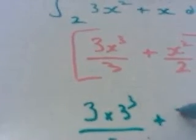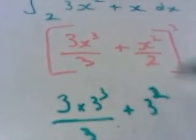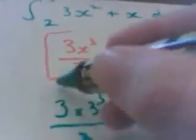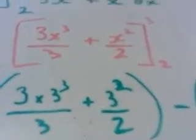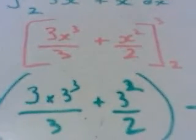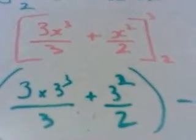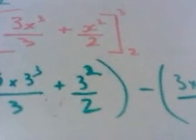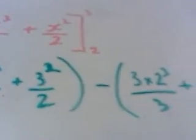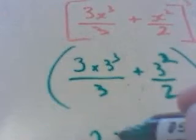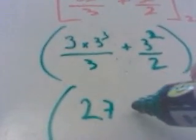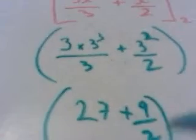So we now have to substitute the values in, so we've got 3 times 3 cubed over 3 plus 3 squared over 2, subtract—now substitute the 2 in—3 times 2 cubed over 3 add 2 squared over 2. And let's work those out. So that's 3 divided by 3 is 1, and 3 cubed is 27, so that's 27 plus 9 over 2.